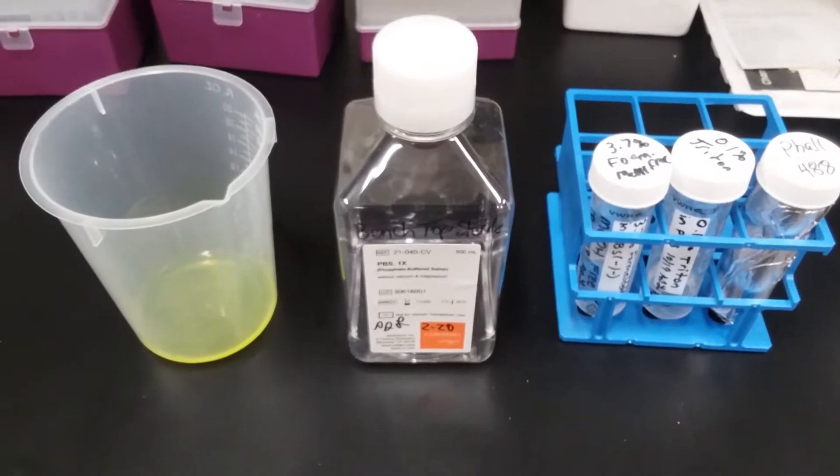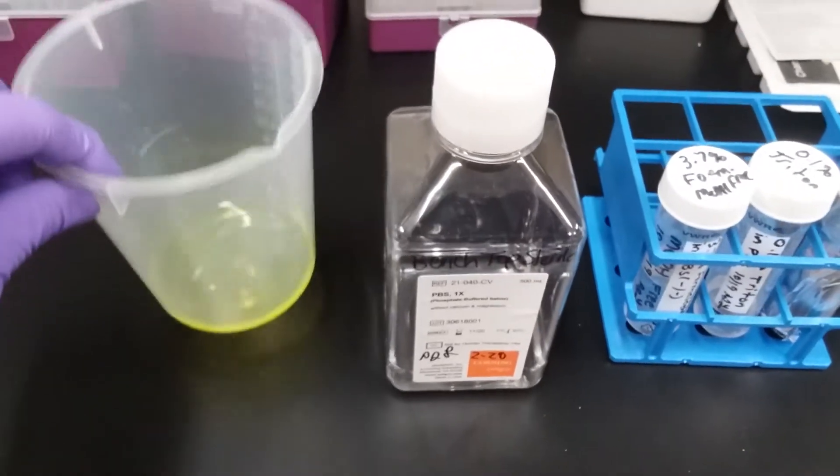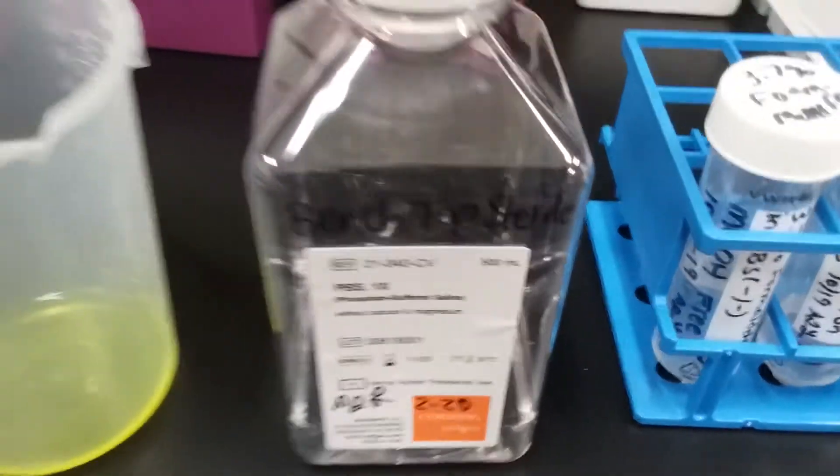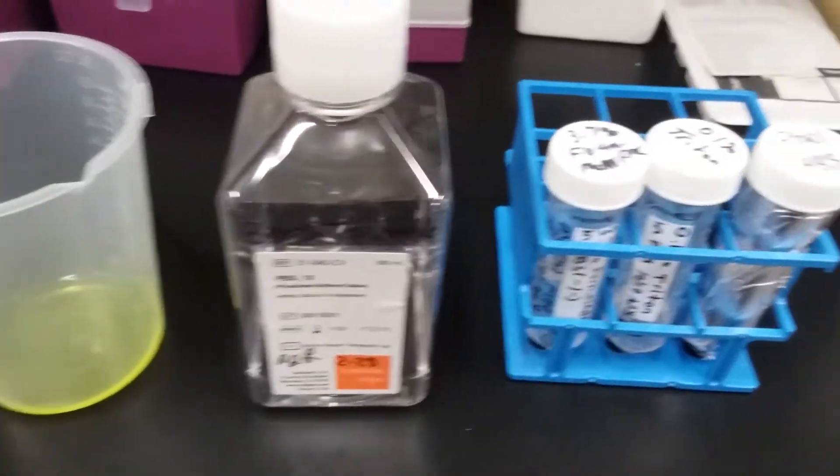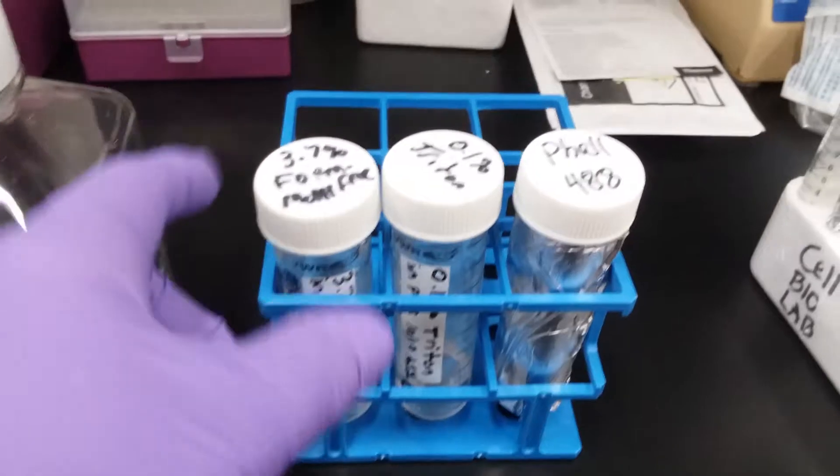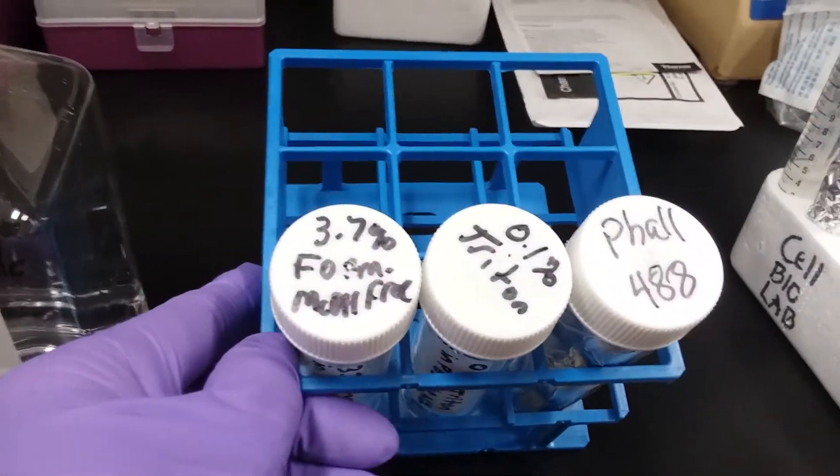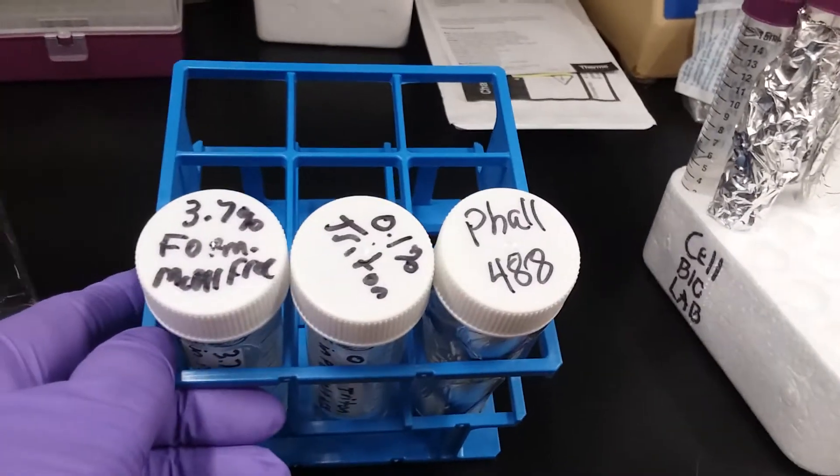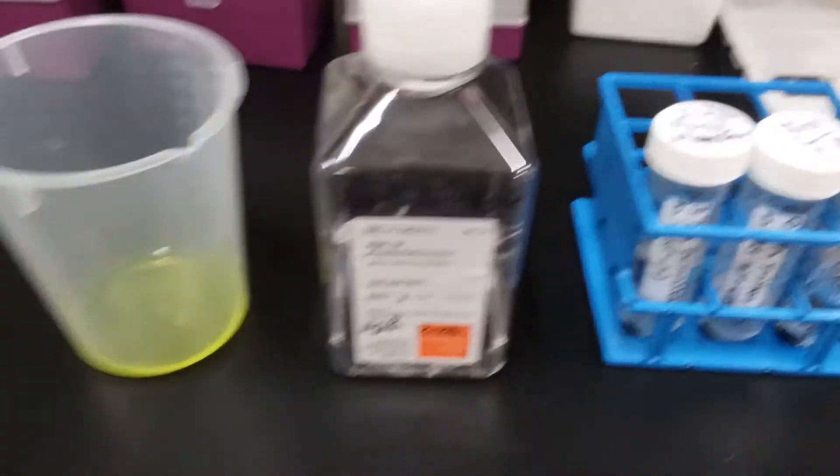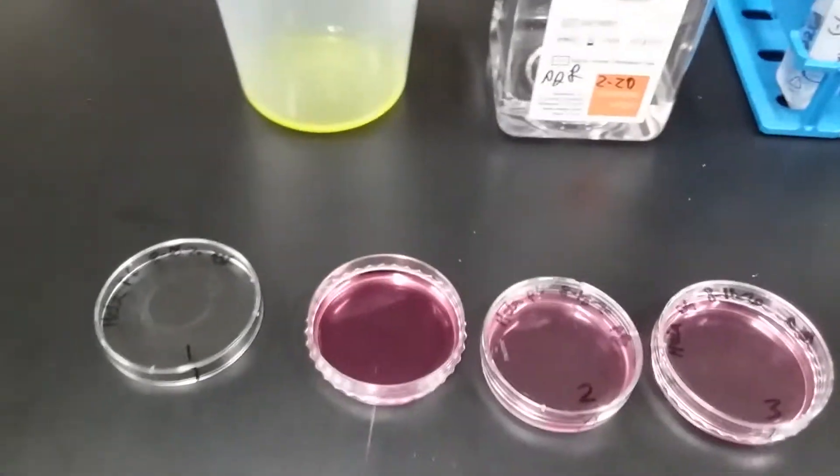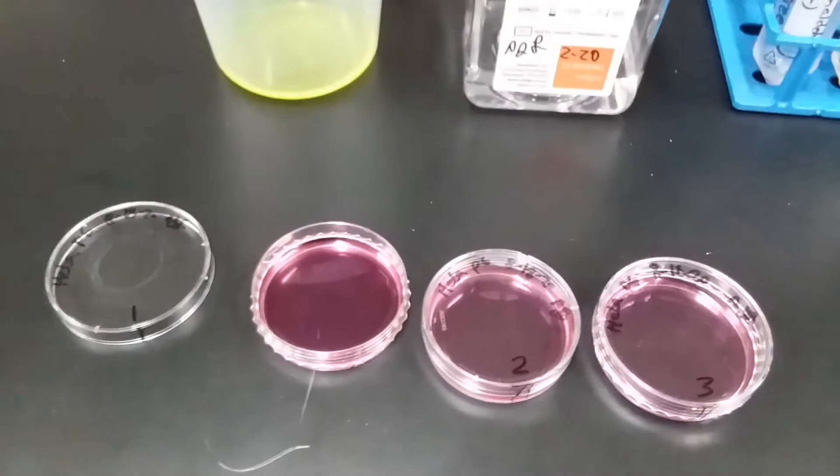And now we want to collect all of our reagents. We have a beaker with Lysol in it. We're going to put all our spent media into that. We have some PBS, which is just a nice wash solution, phosphate buffered saline. And then we have our three reagents we're going to be putting on our cells. So we have formaldehyde, we have 0.1% triton, and we have our phalloidin labeled with our 488. And the first step we're going to take is that we are going to remove the spent media from all three dishes.